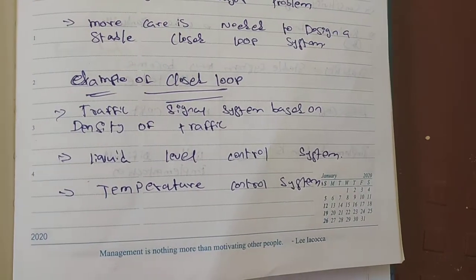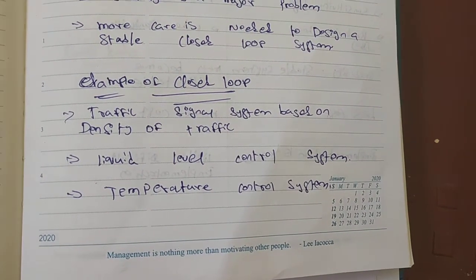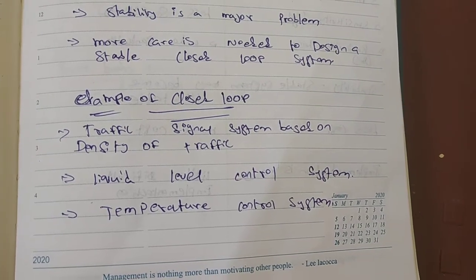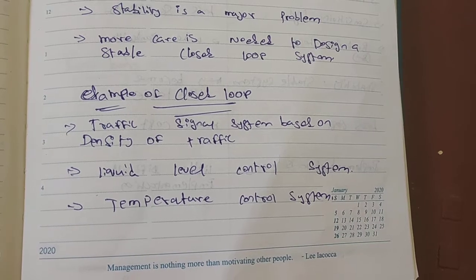In the example, we have a traffic control system. We will control the traffic system. We will control the temperature.